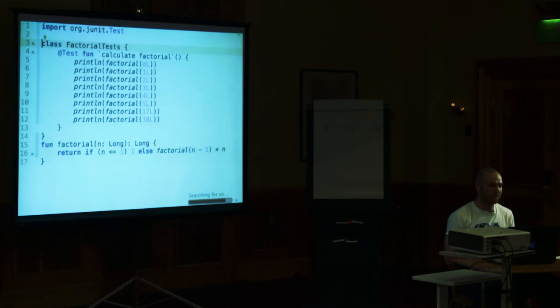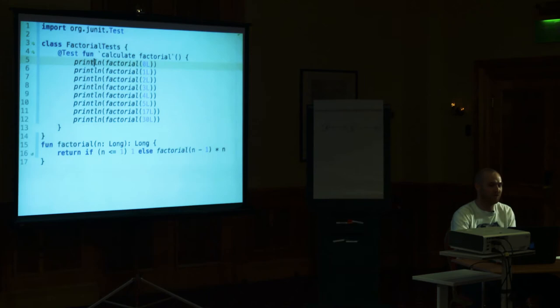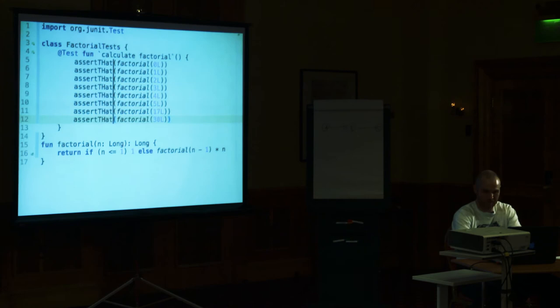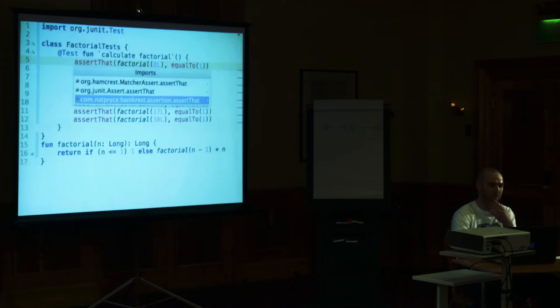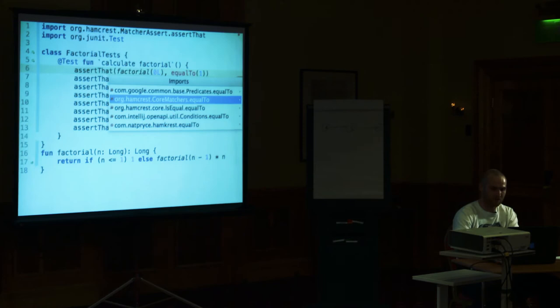Moving factorial outside of main. There are people who, if they want to run some code, don't create main methods — they just create classes and run tests, which is equivalent to main. Now I'm changing to assertions using `assertThat` with `equalTo`. So here the results were: 1, 1, 2, 6, 24, 120, and then something we don't even know. Running again to see it fails on the right line — yes, it fails on that line.